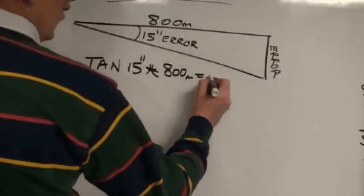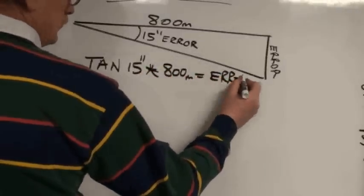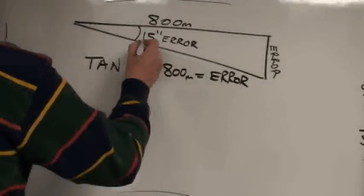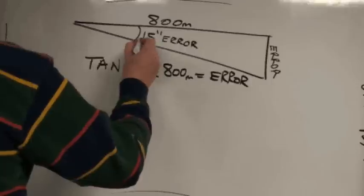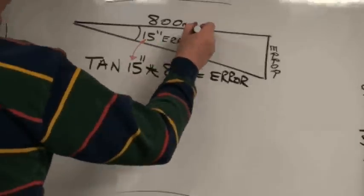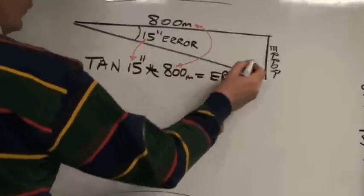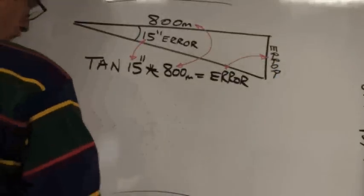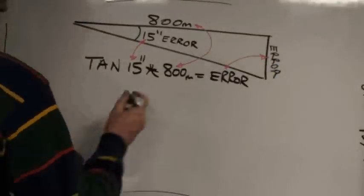We can take the tangent of 15 seconds multiplied by the 800-meter distance, and that will give us the error. The 15 seconds is the error in angle, and we're propagating that error over an 800-meter distance, and that creates our error on our sighting point.